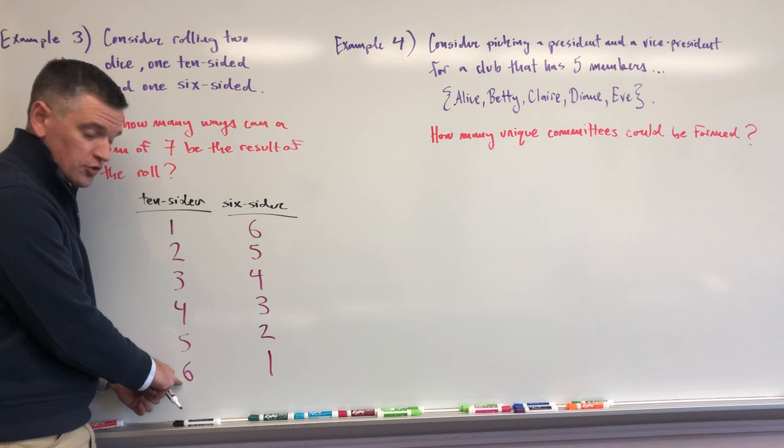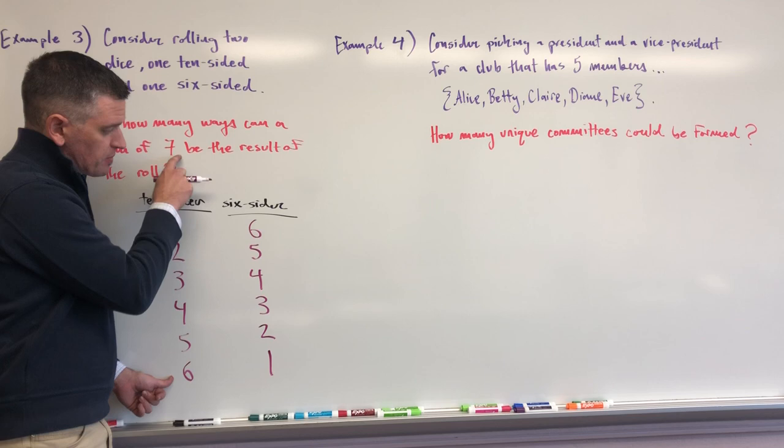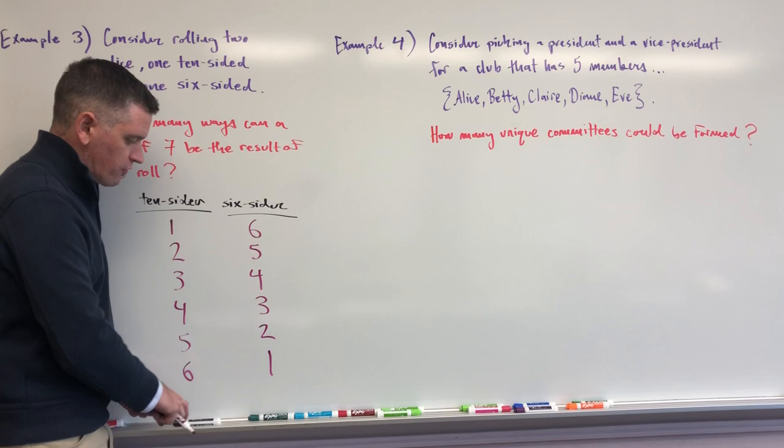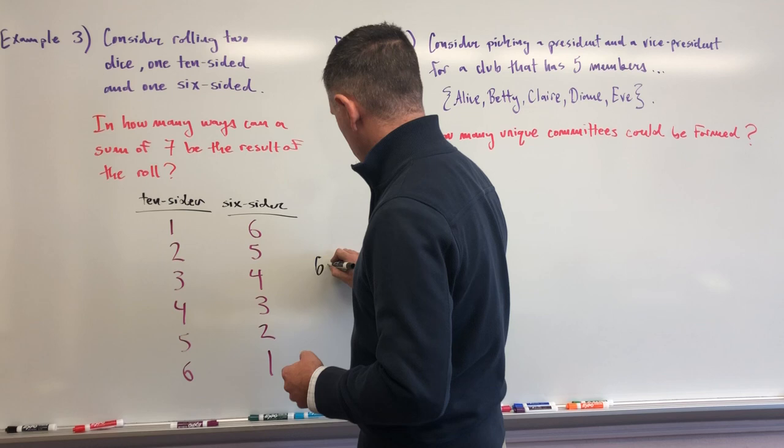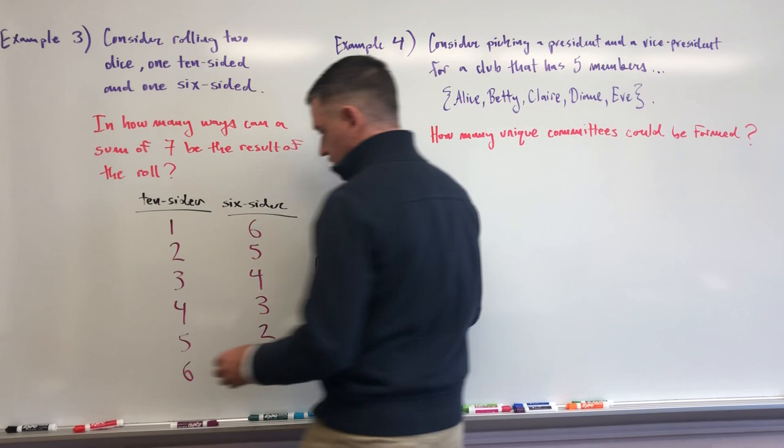And then six-one. Now the ten-sider has values larger than six — we could get a seven, eight, nine, or even ten — but because our sum needs to be seven and we can't use negative values on the six-sider, we're done. This is our whole list. So the answer to how many ways can the sum of seven be obtained is six ways. Systematic listing at its finest — we'll do this with plenty of different kinds of dice.